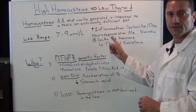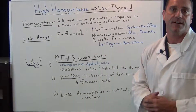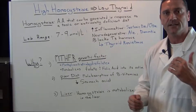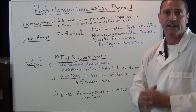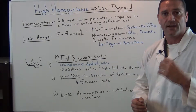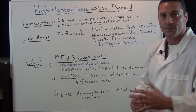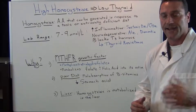Also, too much homocysteine leads to neurodegeneration — the brain stuff. You have inflammation in your system which actually shrinks the brain, and this leads to situations like Alzheimer's and dementia if your homocysteine levels go chronically high.